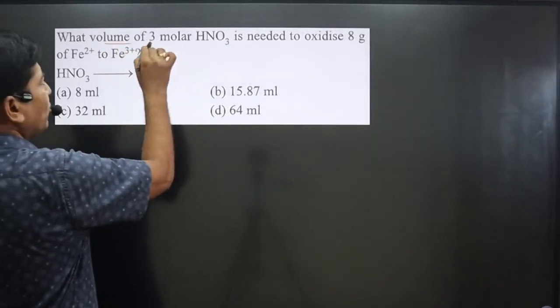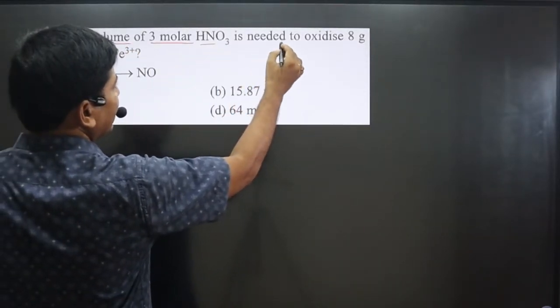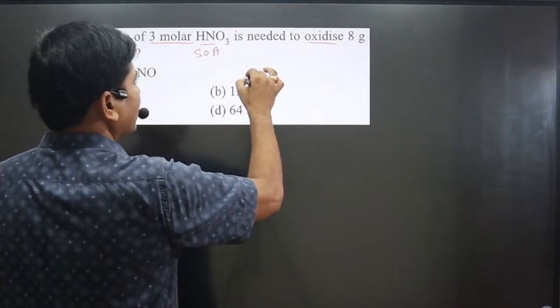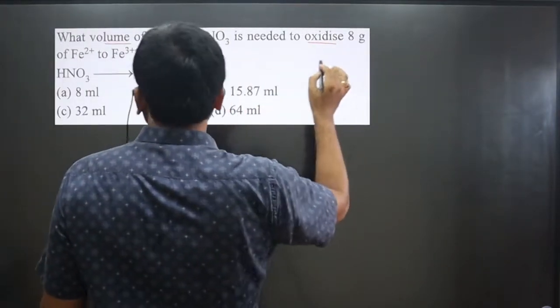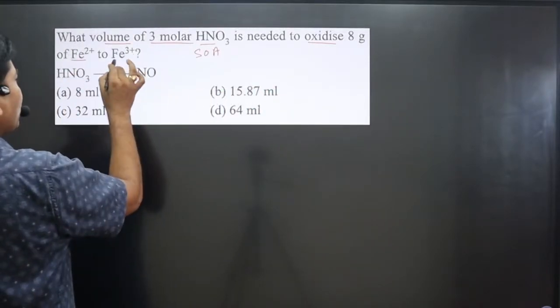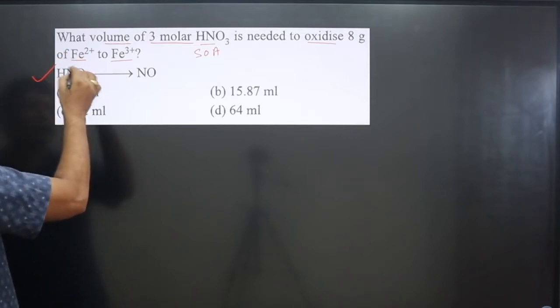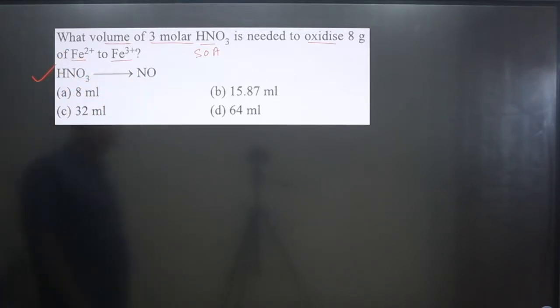Question says what volume of 3 molar HNO₃ is needed to oxidize 8 gram of Fe²⁺ to Fe³⁺. HNO₃ is a strong oxidizing agent, that's why it is oxidizing. The equation is also given there. You can see HNO₃ is converting into NO. From here we can calculate n-factor by law.